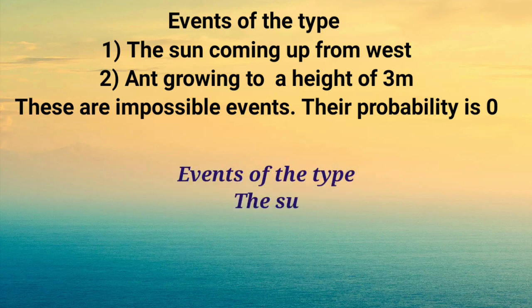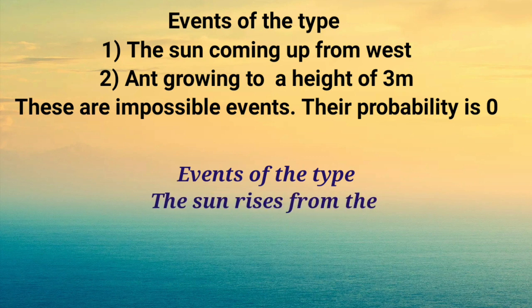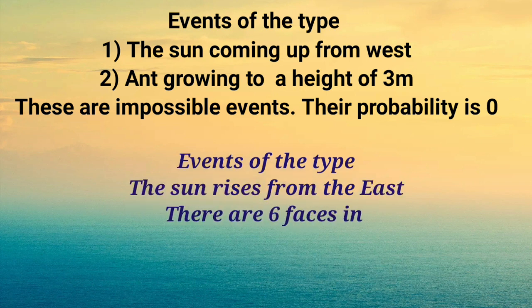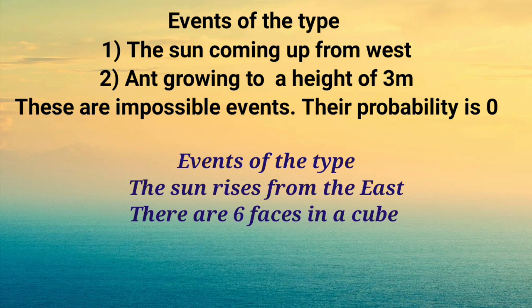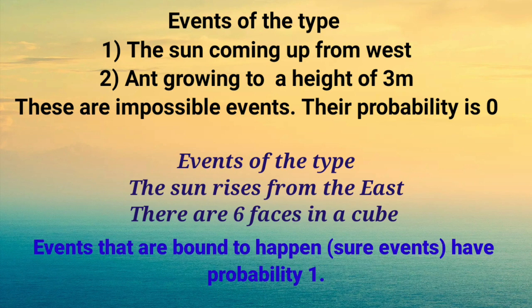And the next type of events are where probability is 1. They are sure events. For example, the sun rises from the east. There are 6 faces in a cube. Events that are bound to happen, they have probability 1.